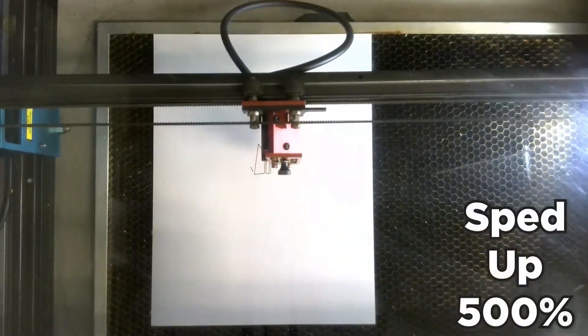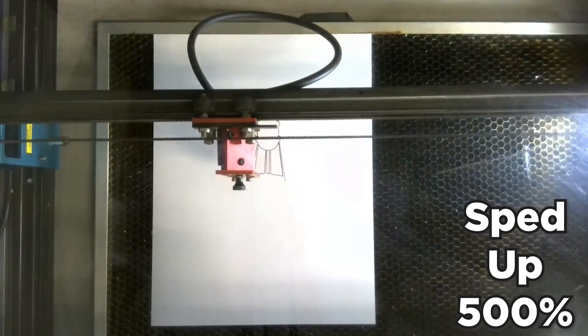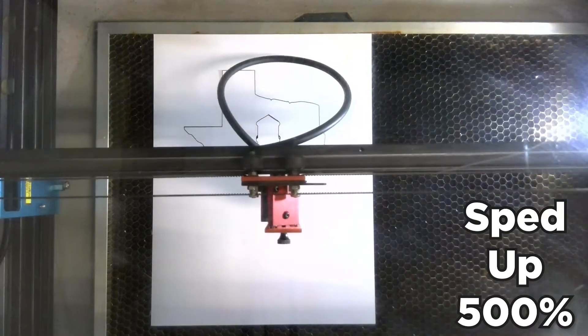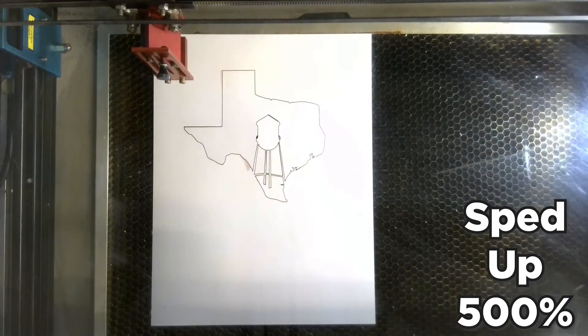The final stencil I cut is one I created myself by combining the outline of Texas and a scalable vector graphic created by our Youth Services Librarian Amanda Codbin of the iconic Pflugerville water tower.